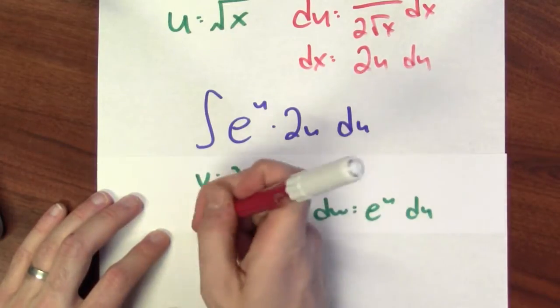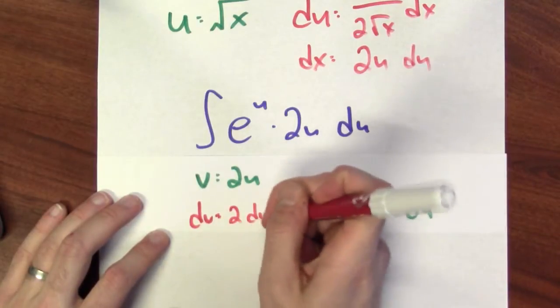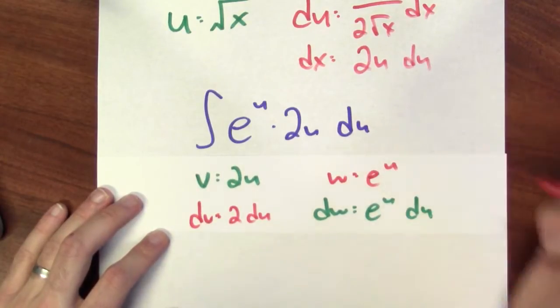And now, the derivative of v gives me that dv is 2 du. And an antiderivative here, I can pick one. I'll have w be e to the u.